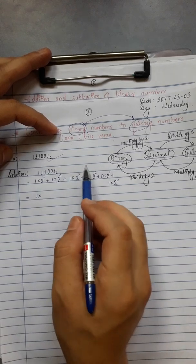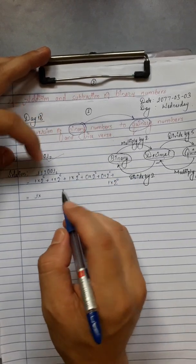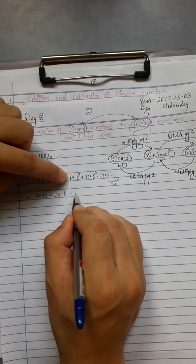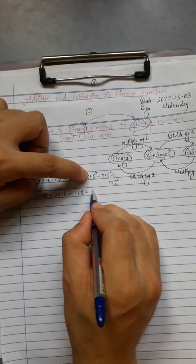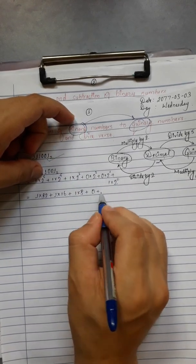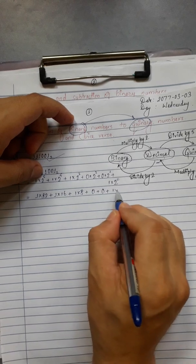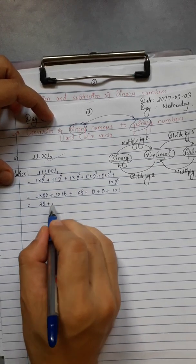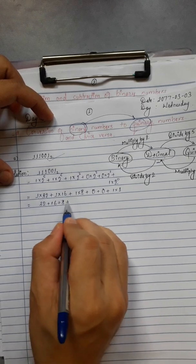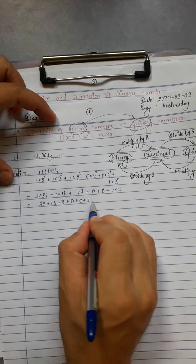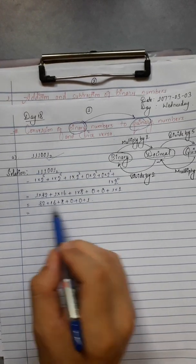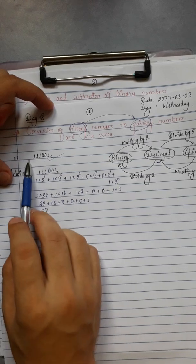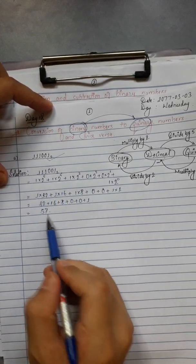Two-power-five equals 32. Plus one into two-power-four equals 16. Plus one into two-power-three equals 8. Plus zero into two-power-two equals 0. Plus zero. Plus one into two-power-zero equals 1. So: 32 plus 16 plus 8 plus 0 plus 0 plus 1 = 57. Binary 111001 equals decimal 57.